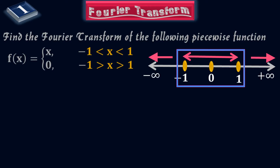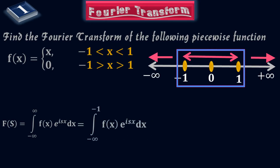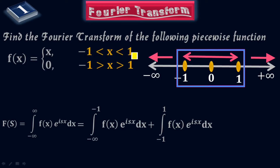Now let me apply the Fourier Transform. The formula is F(s) equals the integral of f(x) times e to the iota·s·x dx, where the limit ranges from negative infinity to positive infinity. Since the given function has two pieces, it is a piecewise function. Therefore, I'm going to make two pieces of the formula — the first from negative infinity to negative one, and the second from negative one to positive one.